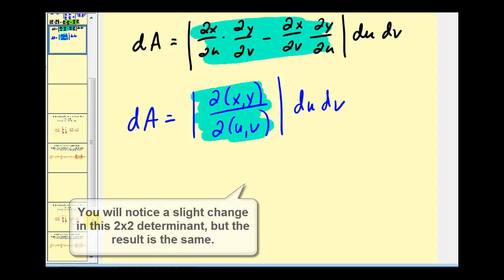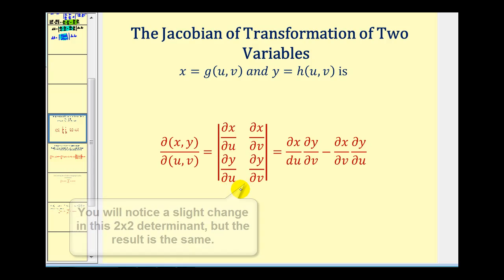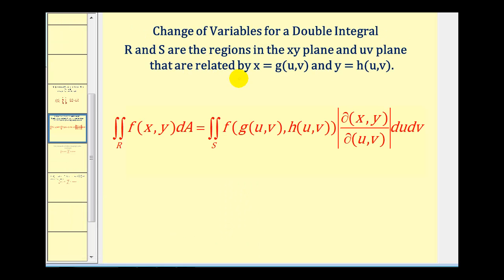To summarize: the Jacobian of a transformation of two variables is given by this formula, as we just derived. When converting a double integral, where R and S are regions in the x, y and u, v planes related by the given equations, we can determine the extra integrating factor using this Jacobian formula.